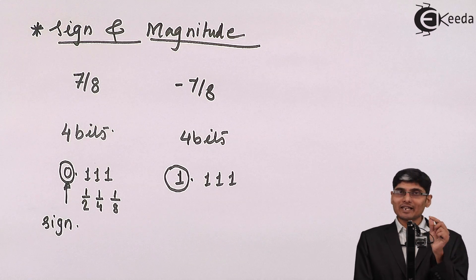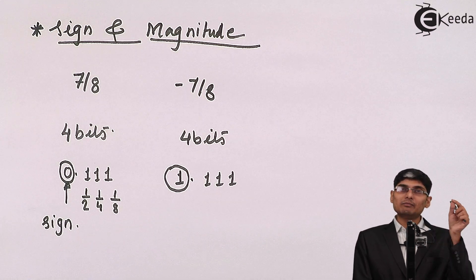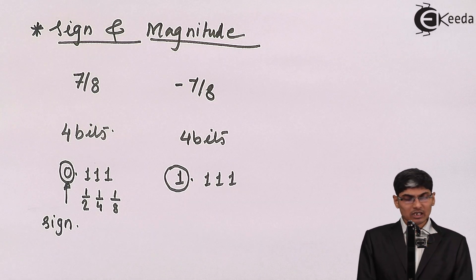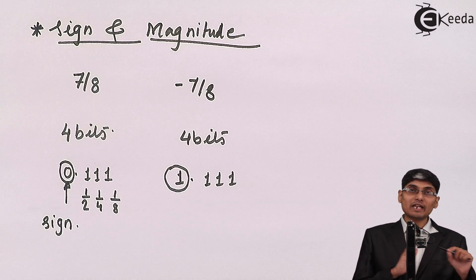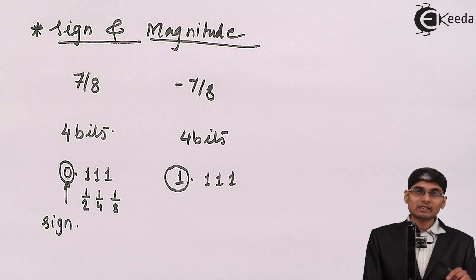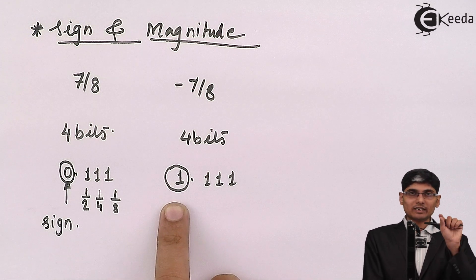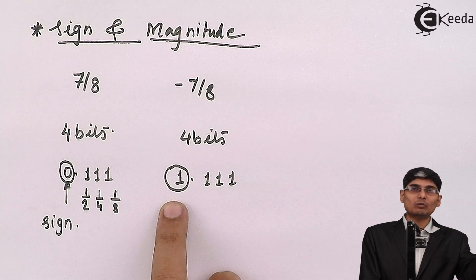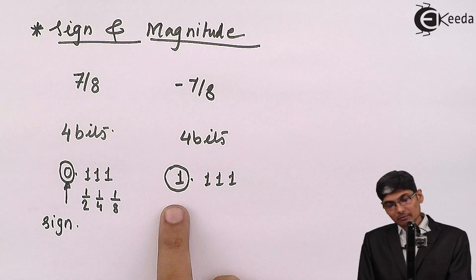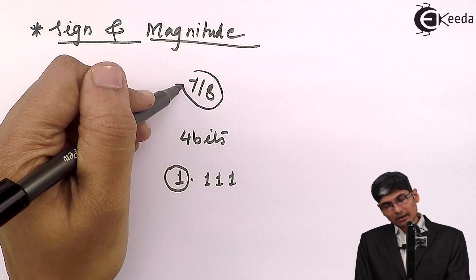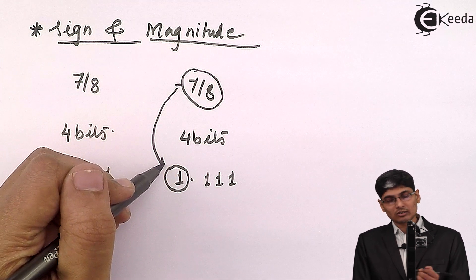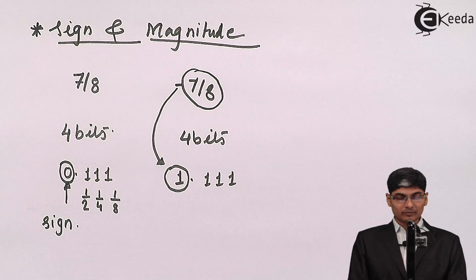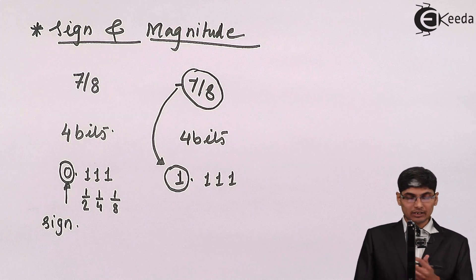So whenever I do an algorithm using sign and magnitude form, I will check the MSB — if the MSB is 1 the number is negative, if the MSB is 0 the number is positive. One bit is the sign bit and the magnitude is 0.111, which is 7/8. The minus is represented using that leading 1. This is how we represent a sign and magnitude number.